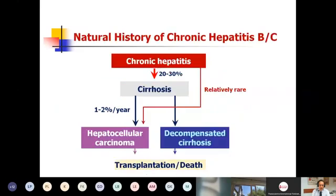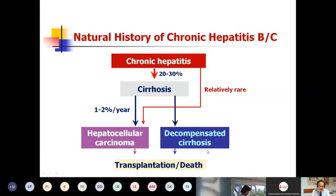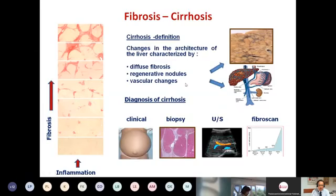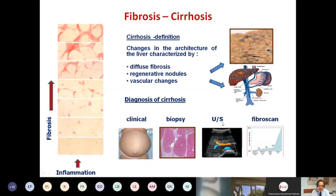Professor Duseiko has nicely covered the topic of chronic hepatitis. Chronic hepatitis may lead to cirrhosis in a substantial number of patients, and those with cirrhosis may go on to decompensation or hepatocellular carcinoma, then to death or transplantation. Cirrhosis involves diffuse fibrosis with changes in the liver architecture, regenerative nodules, and vascular changes leading to portal hypertension. The diagnosis of cirrhosis can be made clinically, by biopsy, by ultrasound with triplex of the portal vein and collaterals, and also by FibroScan.